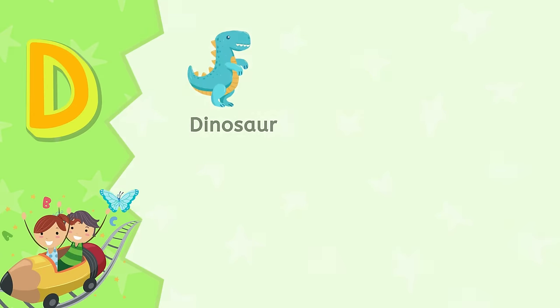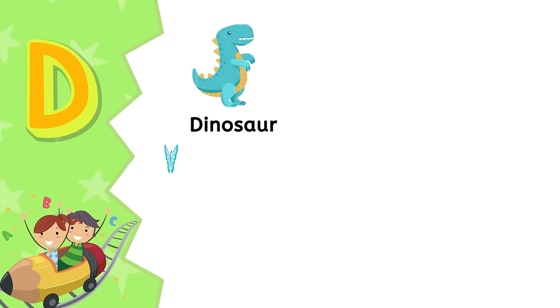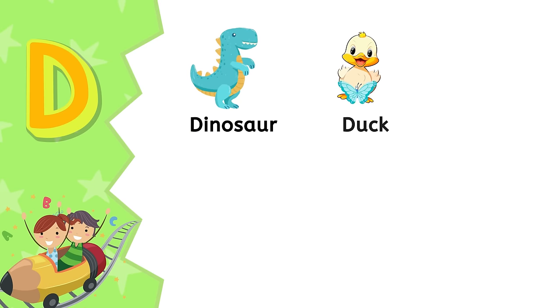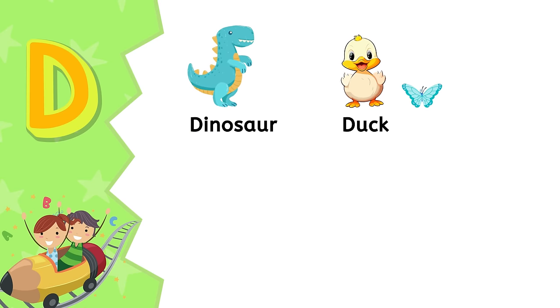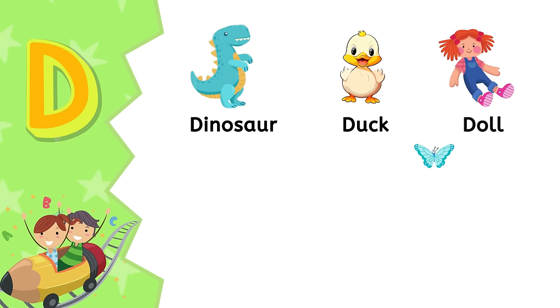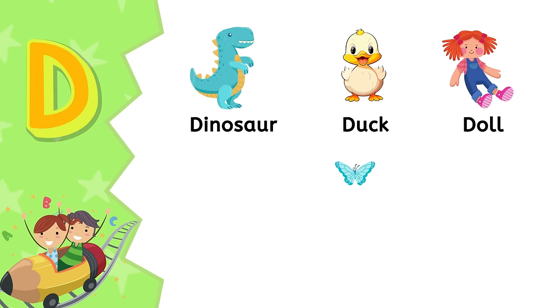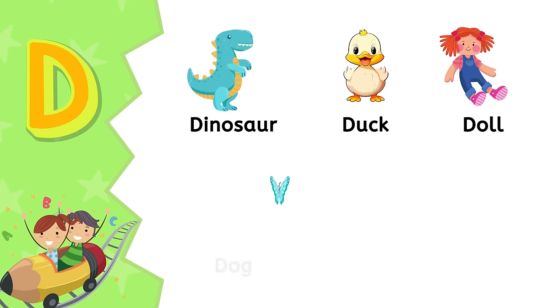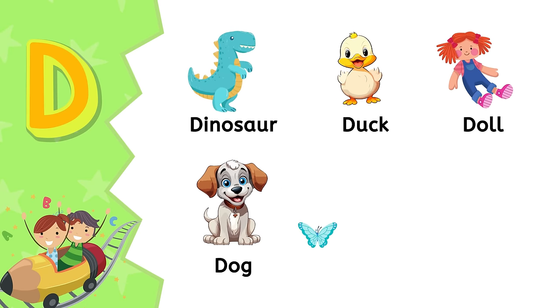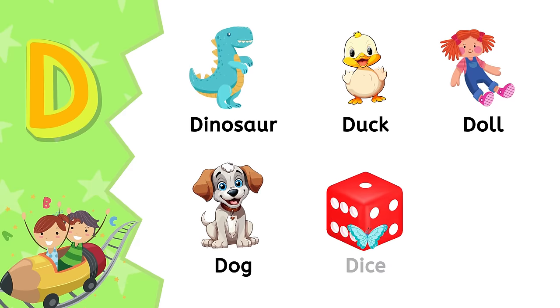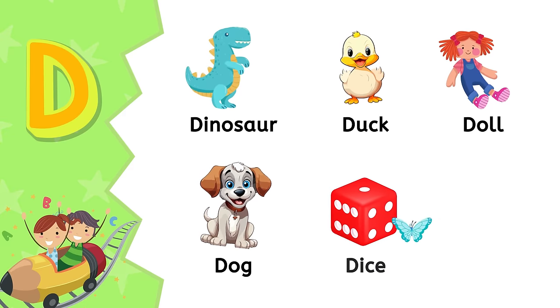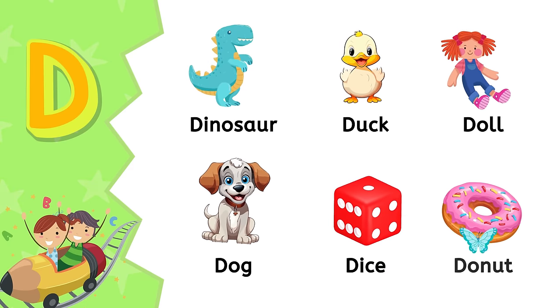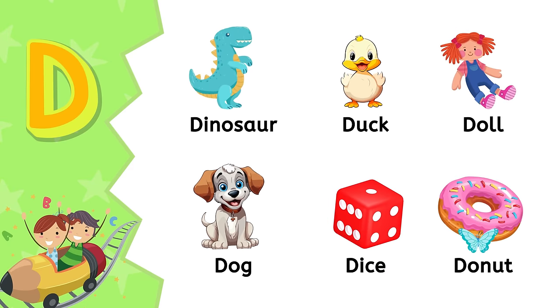D. D is for dinosaur. D is for duck. D is for doll. D is for dog. D is for dice. D is for donut.